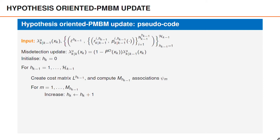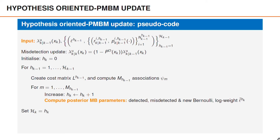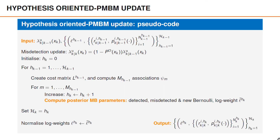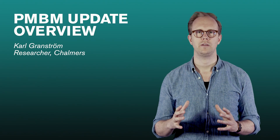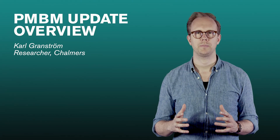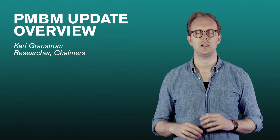We increase the posterior index and compute the posterior multi-Bernoulli parameters — this will be shown in the next video. It consists of detected, misdetected, and new Bernoullis, and we also need the posterior log weight. The number of posterior multi-Bernoullis is given by the index after iterating through the prior and all the associations. We then normalize the log weights using the same method as before. That is the last step in the hypothesis-oriented Poisson multi-Bernoulli mixture update. That was an overview of the PMBM update — in the next video we will go over all the details.